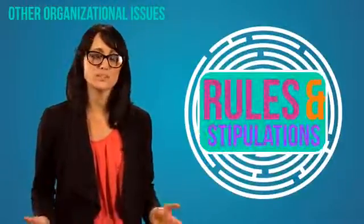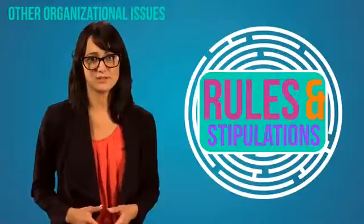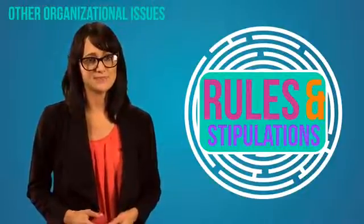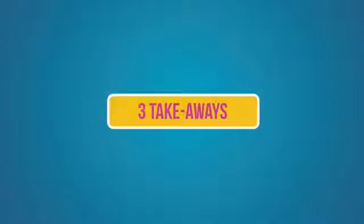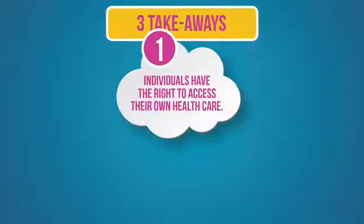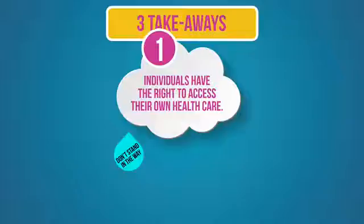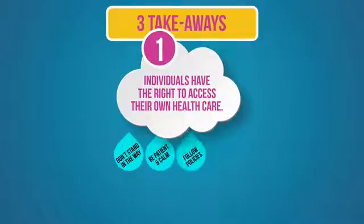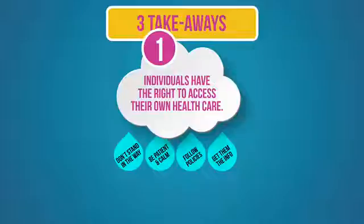The HIPAA Privacy Rule is a maze of rules and stipulations, and it's easy to become confused. For general employees, there are three important takeaways. First, individuals have the right to access their own healthcare. Don't stand in the way of this right, even if the individual is expressing frustration and anger. Sometimes individuals will take out their frustrations on the closest representative of an organization. Be calm and patient. Follow your organization's policies and get people their health information when they request it.